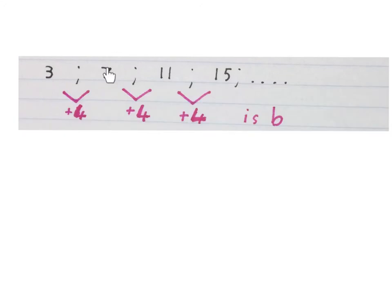Yes, you take 7 minus 3 is 4, 11 minus 7 is 4, and 15 minus 11 is 4. That will be our b.